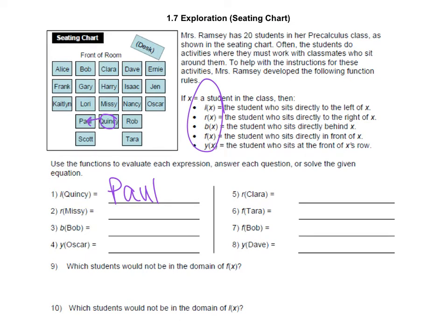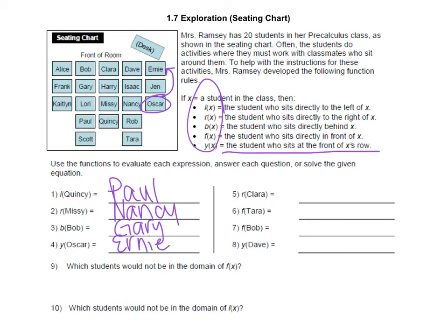Okay, let's go over this. R of Missy means right of Missy, so right of Missy would be Nancy. Behind Bob is Gary. Y of Oscar — remember Y is the student who sits at the front row of that person's row, so we're looking at who is the person in the front row of Oscar's row. Here's Oscar and the person at the very front of that would be Ernie, because Ernie's at the front of Oscar's row.